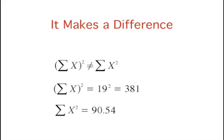It makes a difference whether you sum the values and then square them, or square them and then sum them. The expression on the left of the middle line means to sum up all the values of X, and then square the sum. 19 squared equals 381. The expression on the bottom line means to square the numbers, and then sum the squares: 90.54 as shown before.